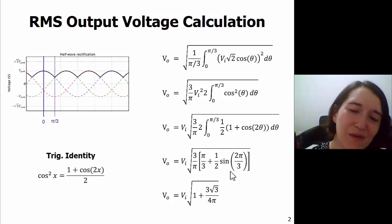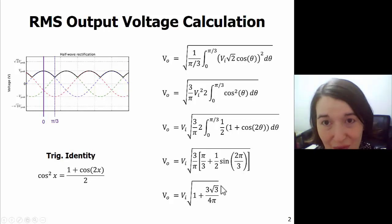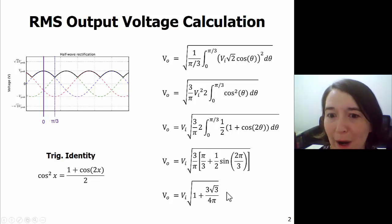So if we evaluate those and combine them all together, we will get this equation. Our output voltage is equal to the RMS input times the square root of one plus three times the square root of three divided by four pi.